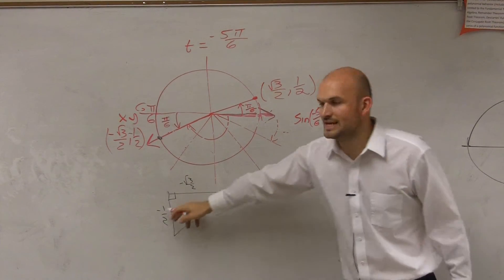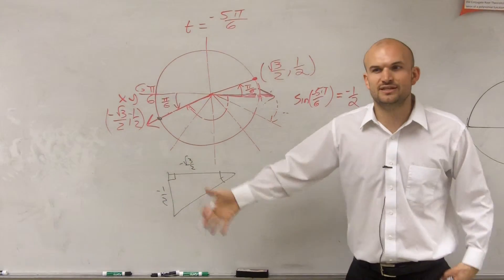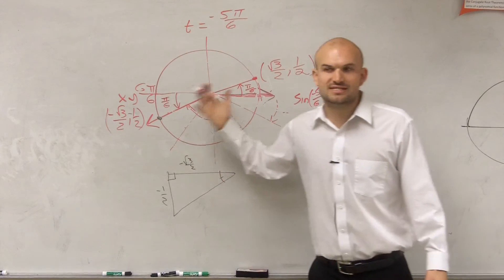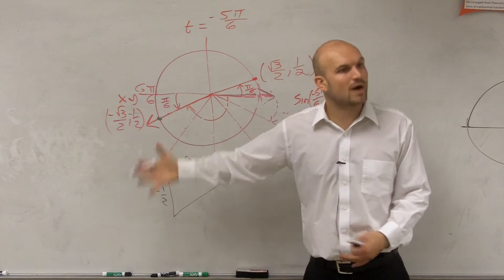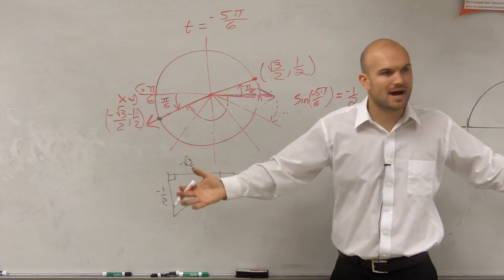So you guys can do negative 1 half over 1 if you want to write it. But in reality, when dealing with the unit circle, your sine just relates to your y-coordinate. It relates to your y-coordinate over your hypotenuse, but your hypotenuse is 1. So why do you need to keep on writing that?